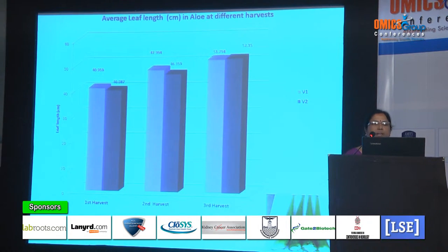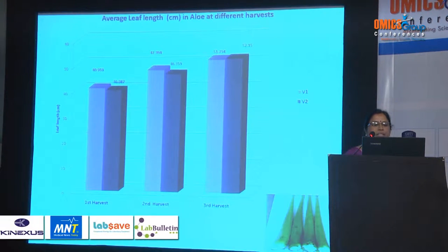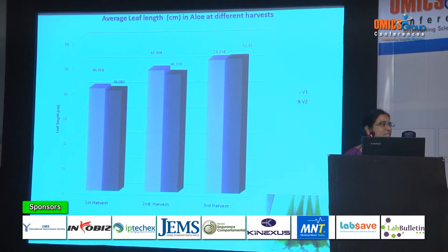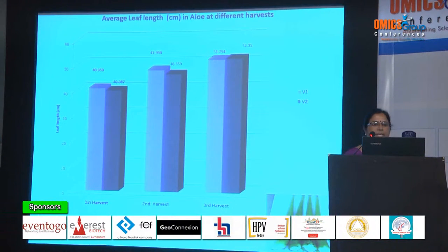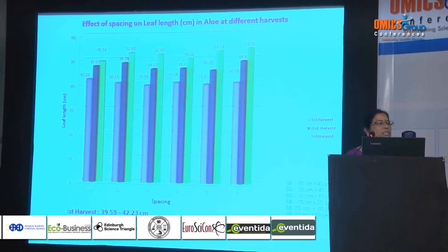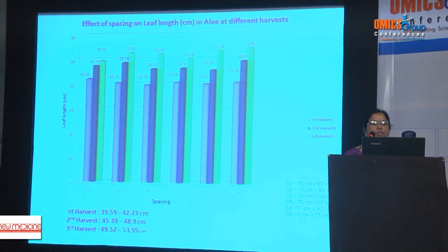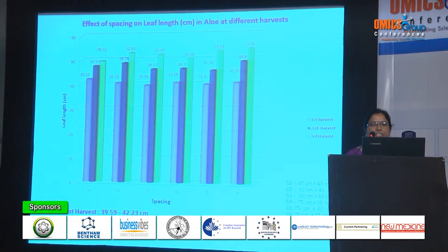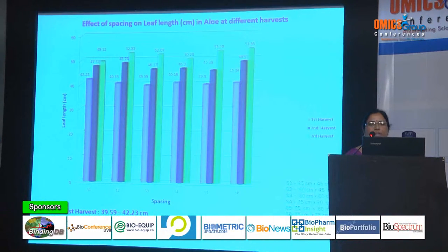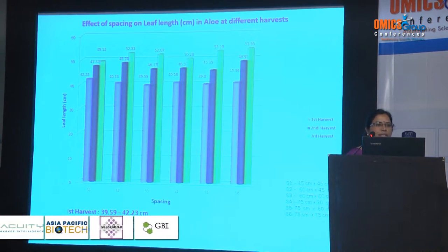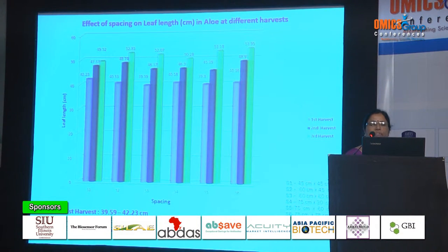This slide shows the average length of the aloe vera leaf at different harvests. During the first harvest, the average leaf length is around 40 cm, whereas in the third harvest it goes to 50–52 cm. There is no significant difference between the two varieties with reference to leaf length. Similarly, no significant difference was found between different spacings for leaf length. The range during first harvest is 39.59 to 42.53 cm, second harvest 45.39 to 48.9 cm, and third harvest 49.52 to 53.95 cm.